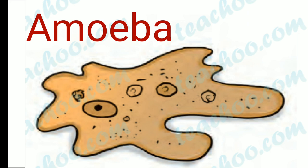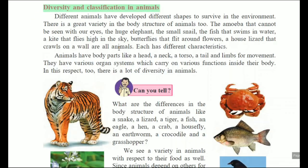Amoeba is a very small species in animals which cannot be observed with our eyes — we have to use a microscope to observe amoeba. From amoeba up to the huge elephant, the largest animal, in between there are many different animals.